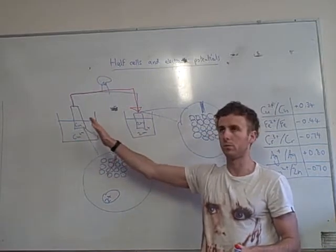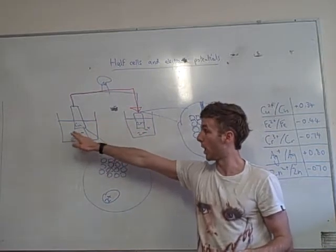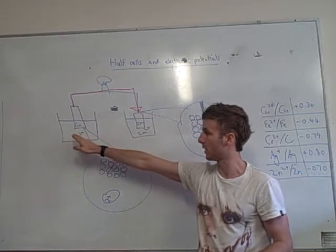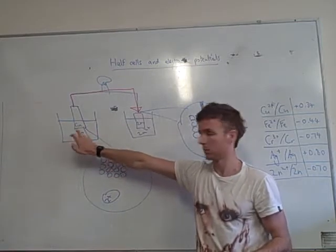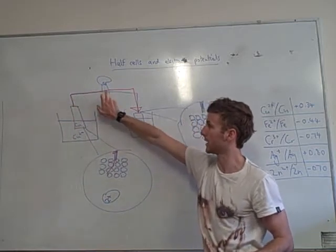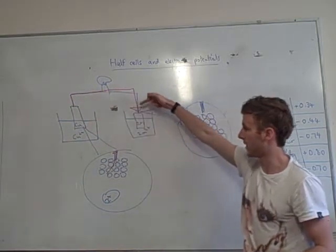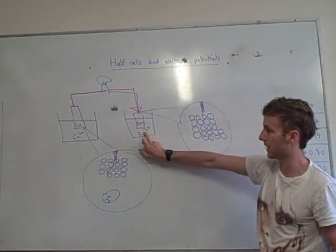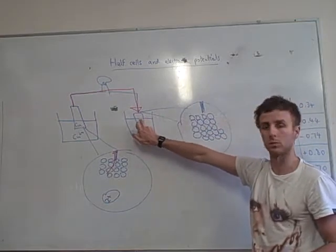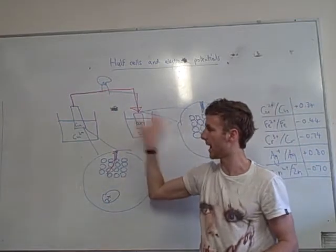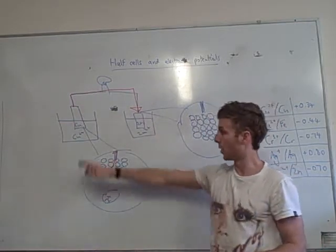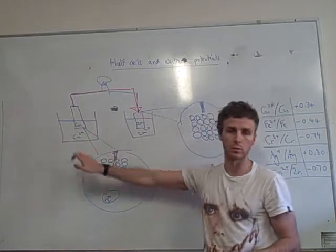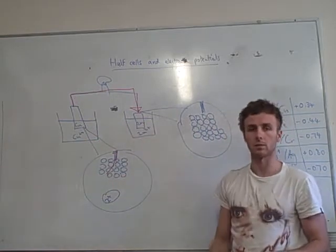So over time, what happens is, and it depends what you have to determine which does what, but on one side, in one half cell, your atoms will lose electrons to become ions. The electrons will travel across, give some of their energy up. And then the electrons will add to the ions here to become atoms. So you've kind of got the opposite thing happening at either end. One of them is losing electrons, and the other one is gaining it. One of them is going from atoms to ions. The other one is going from ions to atoms.